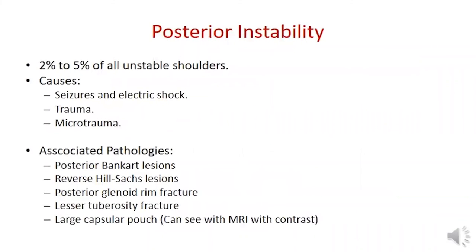Posterior shoulder instability is less common than anterior but more commonly misdiagnosed. It may be caused by epileptic fits, electric shock, posterior-directed trauma, or repetitive microtrauma such as in overhead athletes. Associated pathology may include posterior Bankart lesion, reverse Hill-Sachs lesion, posterior glenoid rim fracture, or fracture of the lesser tuberosity.